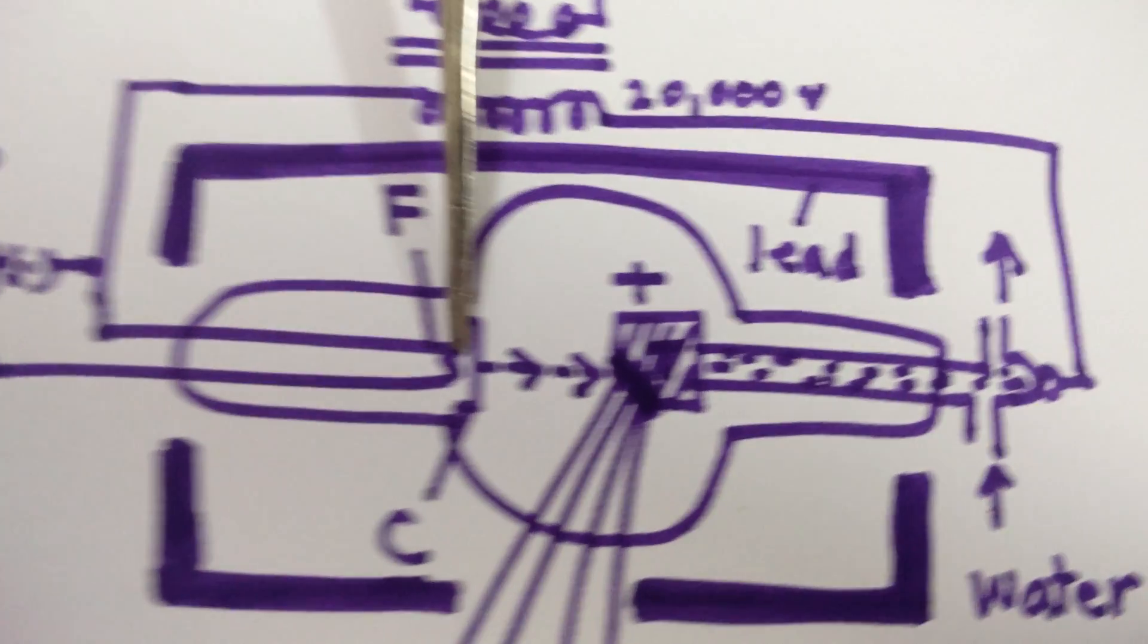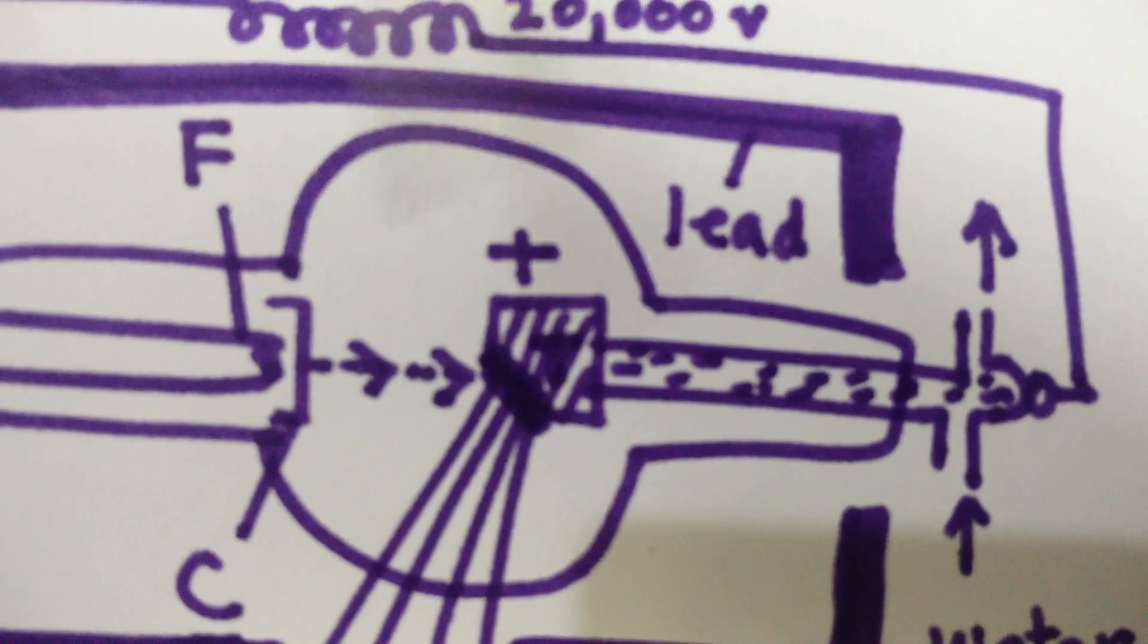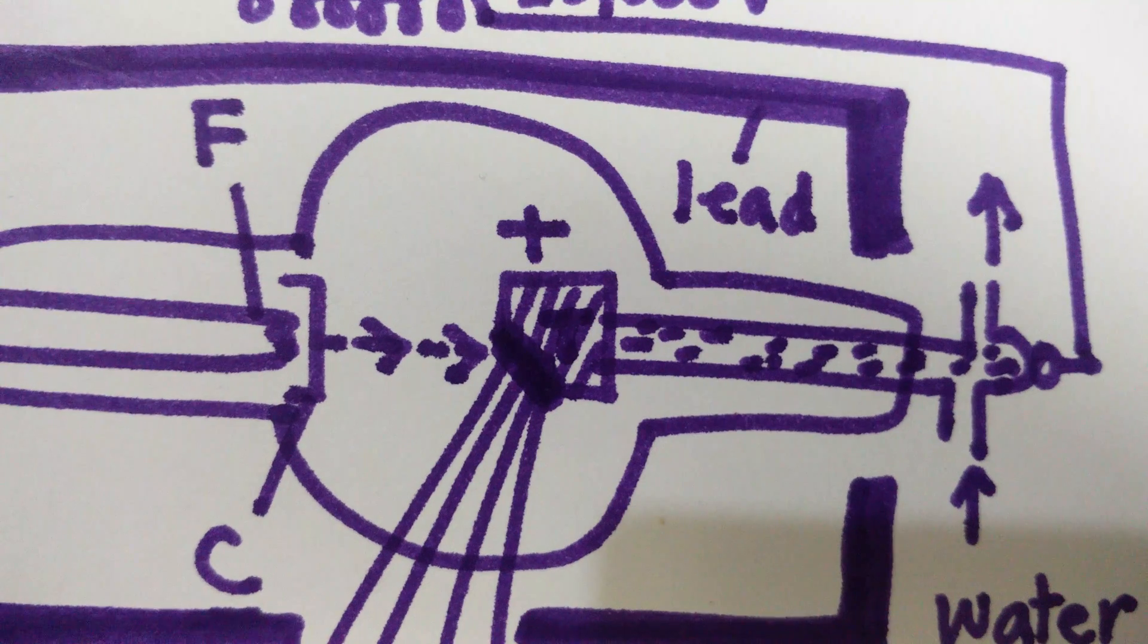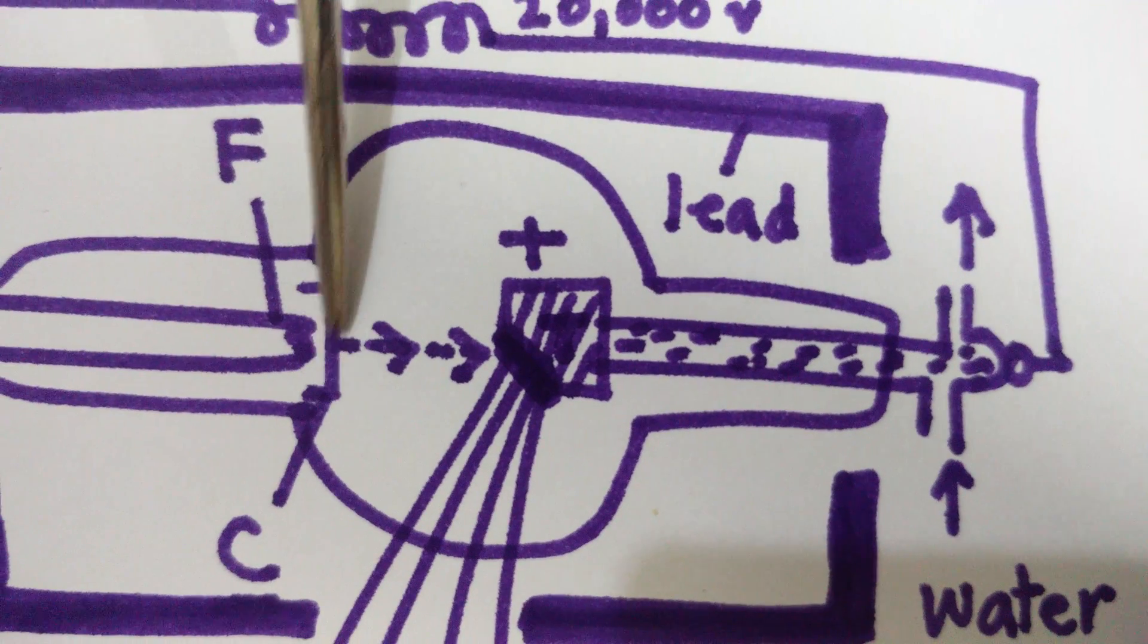The filament, when heated, emits thermionic electrons. Around the filament is a molybdenum cylinder C.